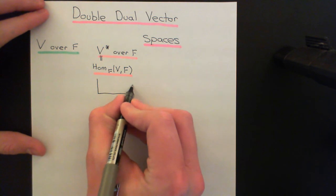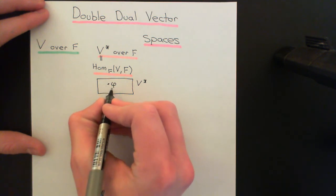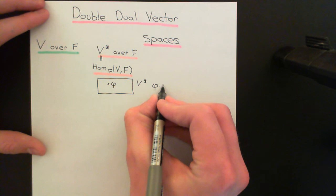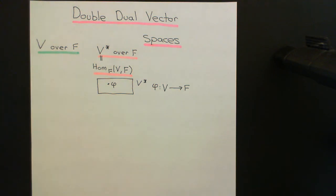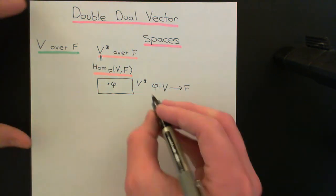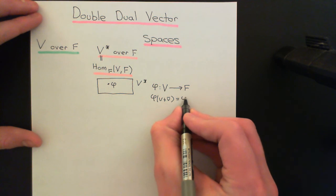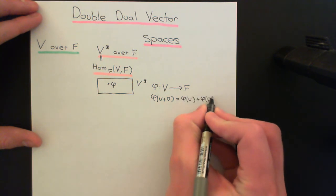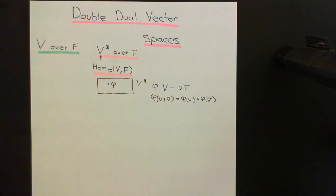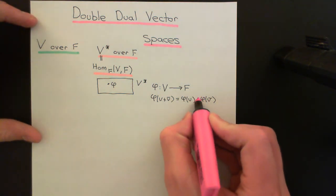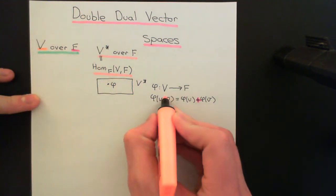If I draw a picture, this box represents the set that is the algebraic dual vector space. The elements of this set will be maps — we might call them phi — and these maps will map the vector space V onto the field F. These must be linear maps, obeying two criteria: phi of (v + v̄) equals phi(v) + phi(v̄), where v and v̄ are elements of V. The addition on the left is in the vector space V (coloured orange), while addition on the right is in the field F (coloured purple).